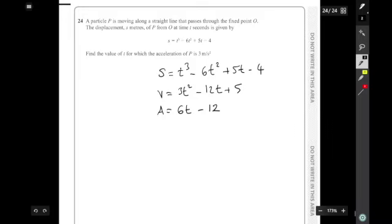So that's differentiating. They want to know when the acceleration equals 3, so I've got to solve this equation: 6t - 12 = 3. Add 12 to both sides, so 6t = 15.